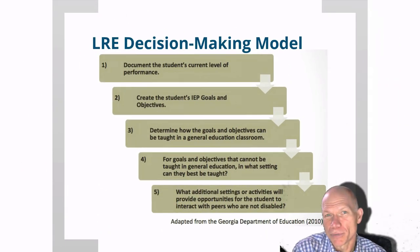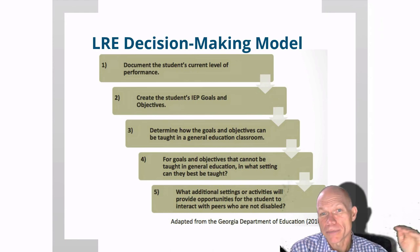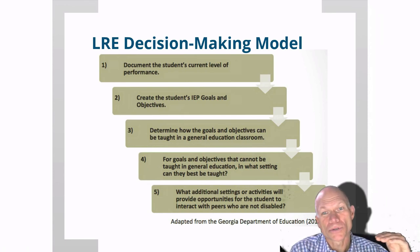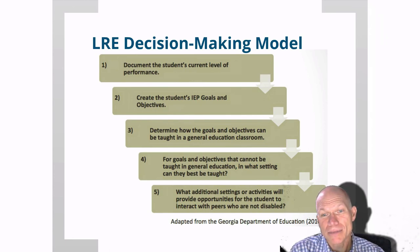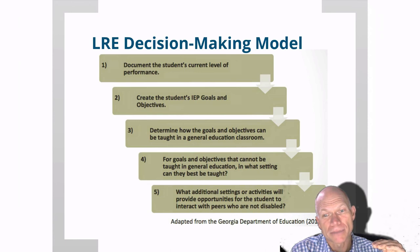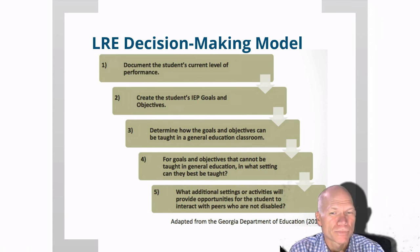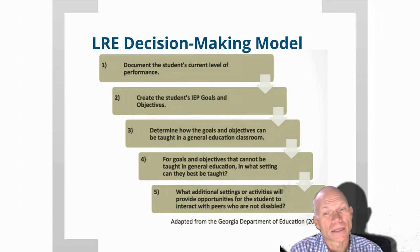The state of Georgia provides a nice decision-making model that other states use as well. We start by documenting the child's current level of performance — the PLAFP — then create student goals and objectives in the IEP based on that current level. Next, we determine how those goals and objectives could be taught in the general education classroom. For goals that can't be taught in general ed with supplementary aids and services, we determine the setting where they might best be taught. Lastly, we determine what additional settings or activities could provide the student with opportunities to be with students without disabilities, such as clubs and other activities.